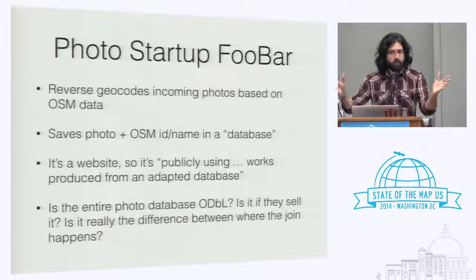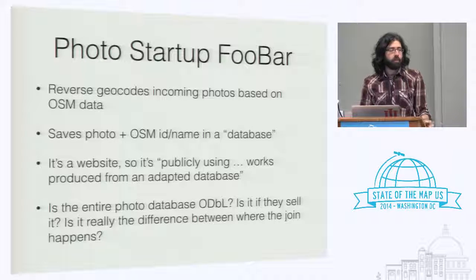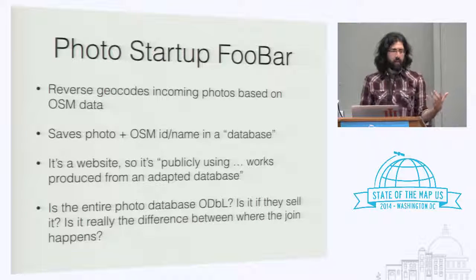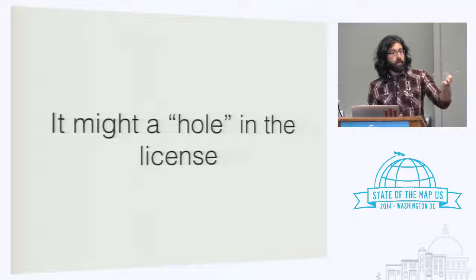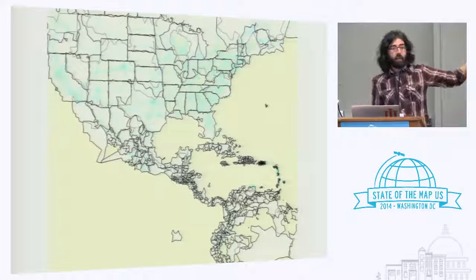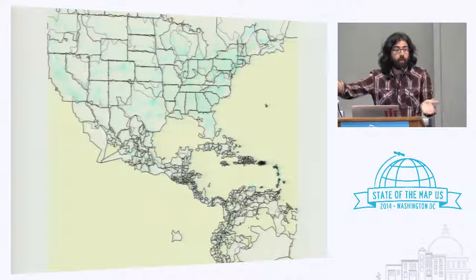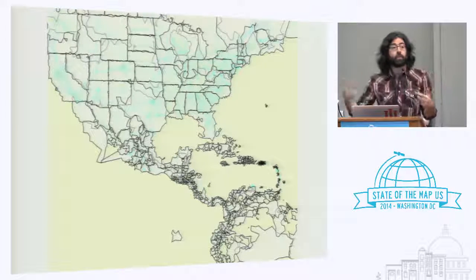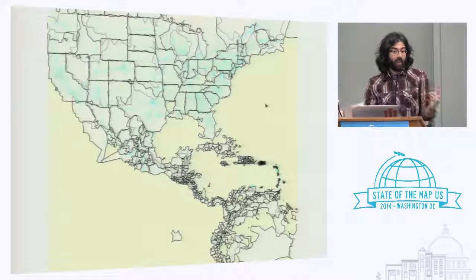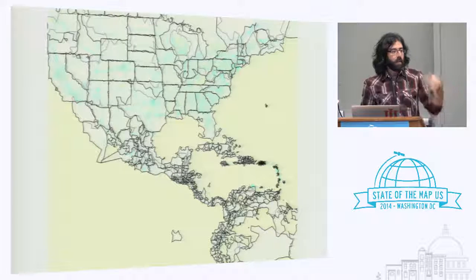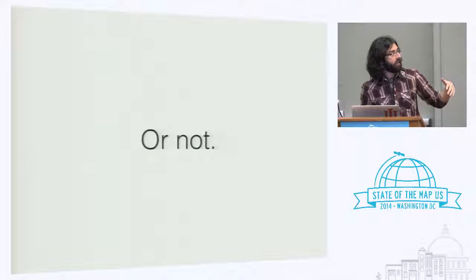It does sound kind of crazy. Obviously if you reverse geocode photos — this photo is taken in Washington DC, this photo is taken at the Capitol — obviously the photos don't become CC-BY, but the metadata kind of does. And if you say the derived data is totally free for all, then you could reconstruct the original database from it, like Flickr alpha shapes. The guidance still makes people really scared. Companies are still really afraid to touch this data and are still concerned about the virality.